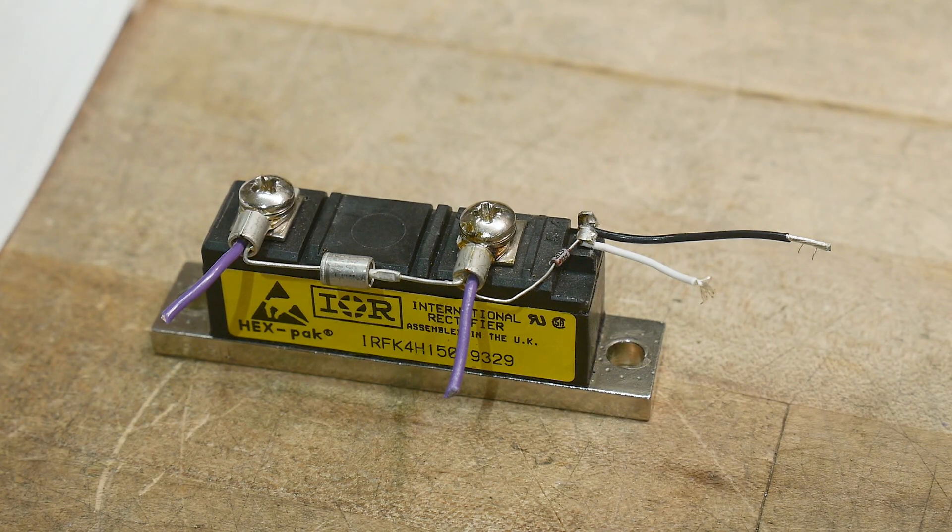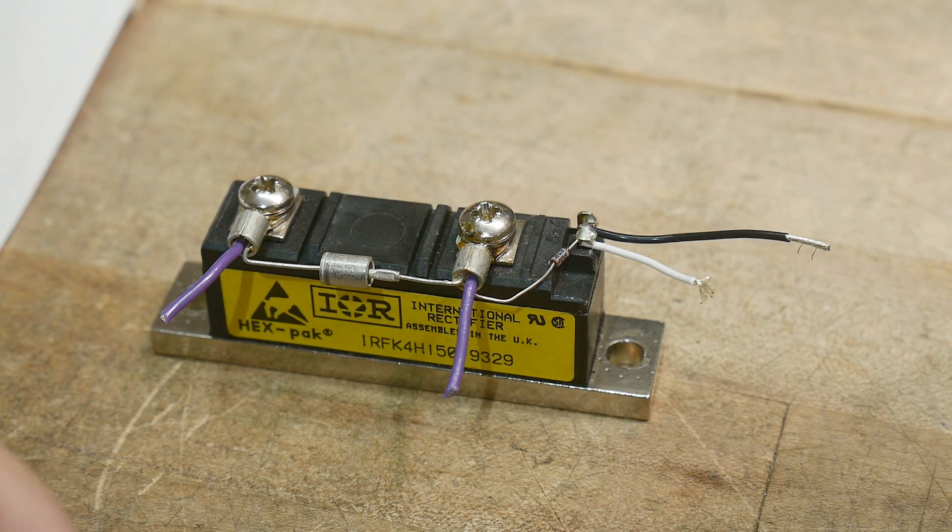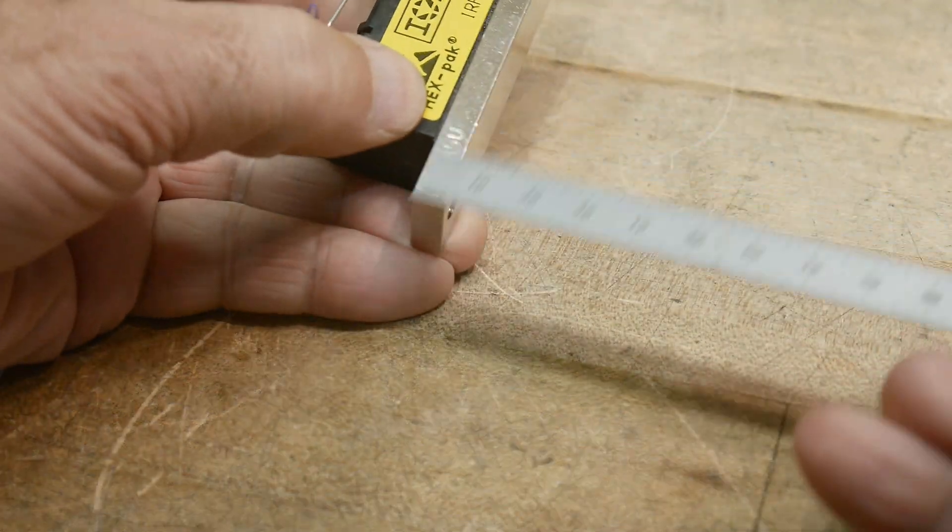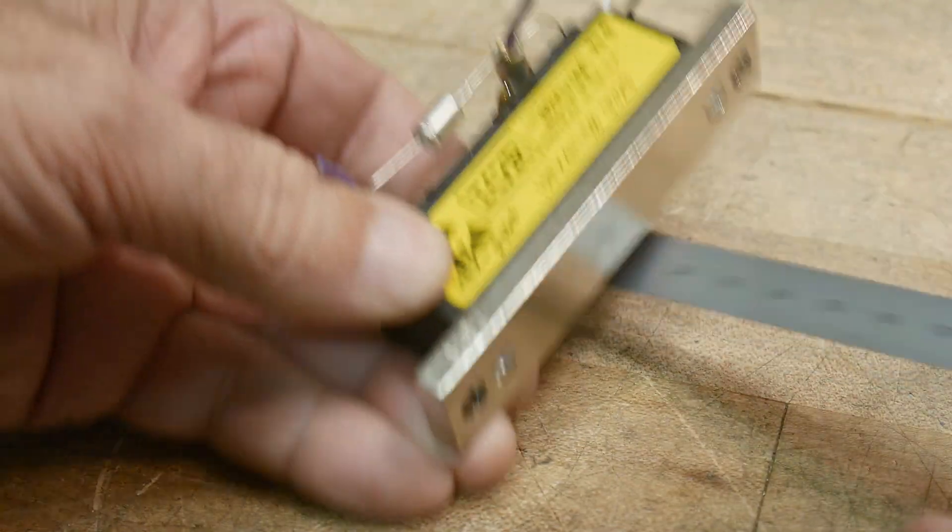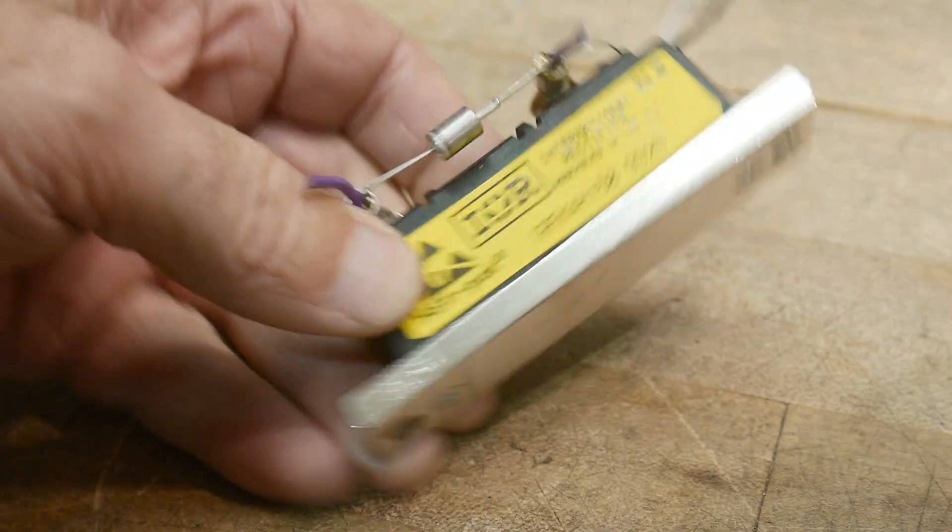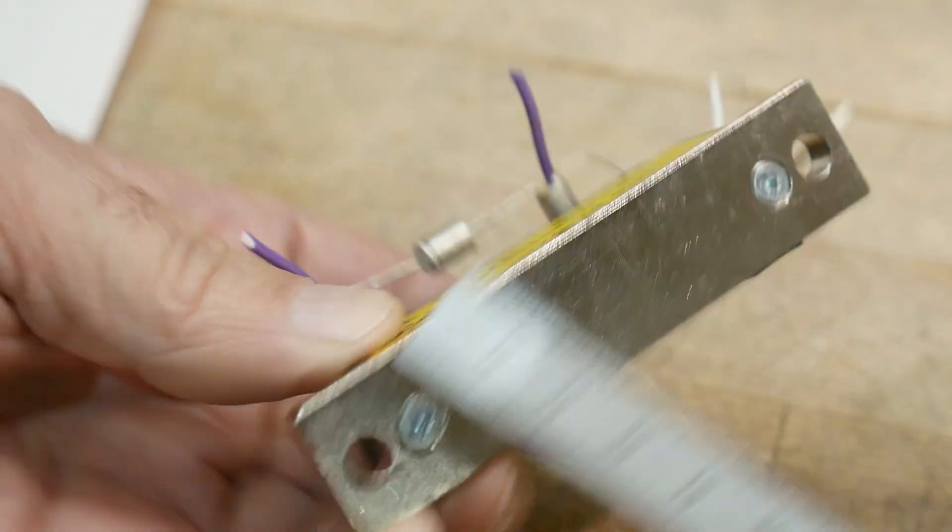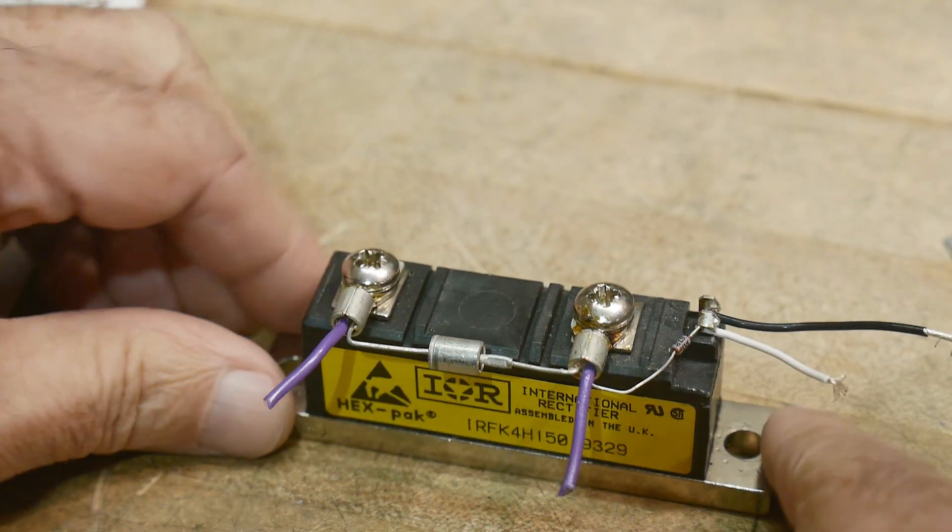Let me find a measuring device here. Yeah, 90 millimeters. This big copper slug here that it's on is 5 millimeters thick. And yeah, 20 millimeters across. It's just giant.